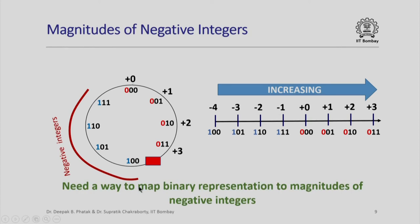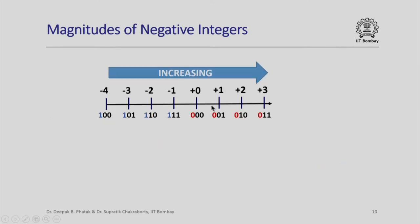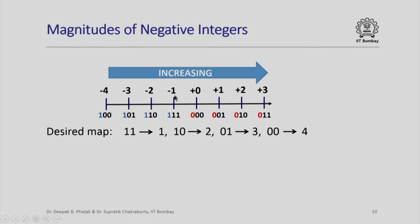We need a mapping from the binary representation to the magnitude of negative integers. Ignoring the MSB sign bit, we want the remaining bits 11 to map to magnitude 1, 10 to magnitude 2, 01 to magnitude 3, and 00 to magnitude 4. While 10 as an unsigned integer does represent 2, sequences like 01 and 11 do not directly give the correct magnitude, so we need a more sophisticated mapping than simply reading the bits as an unsigned integer.